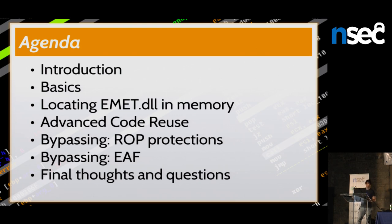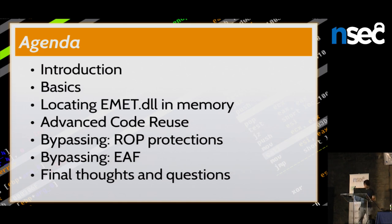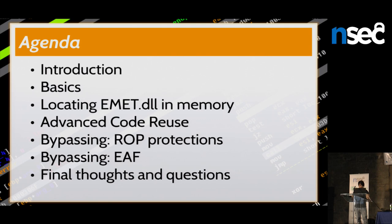We come to the first EMET-related chapter. For everyone who doesn't know, EMET is the Enhanced Mitigation Experience Toolkit from Microsoft, which is an application that can be used to further harden your operating system. If you install it, you can add additional protections to running applications to protect against memory corruption vulnerabilities. The first step for my bypass techniques is always to find EMET DLL in memory. Then I come to advanced code reuse, and after that we talk about the different mitigation techniques — focusing on return-oriented programming protections and export address table access filtering. At the end, I'll give some final thoughts and a comparison between different EMET versions.